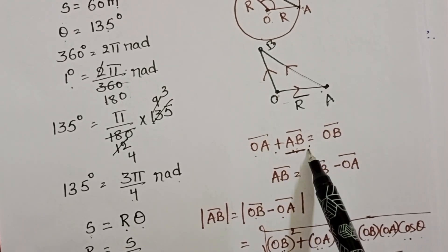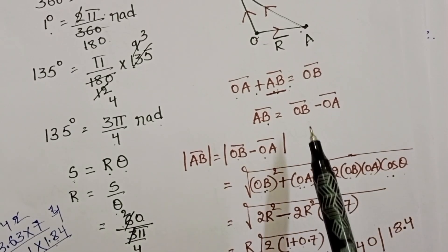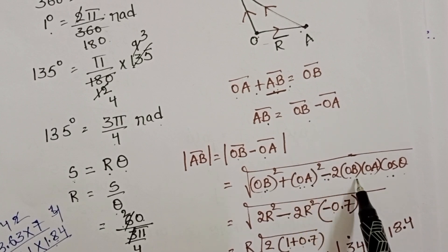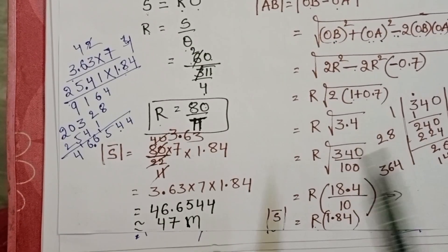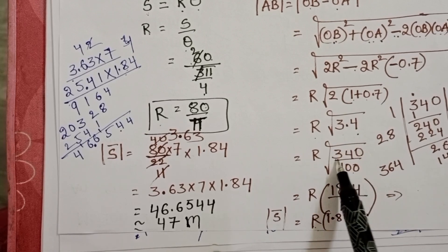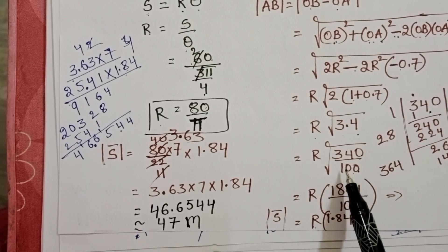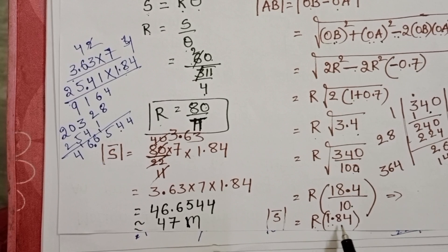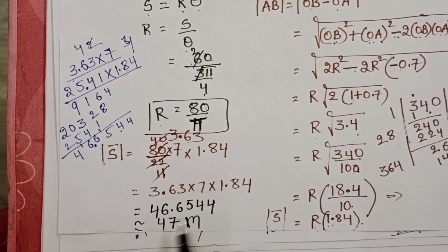AB = OB − OA by the triangular law of vector addition. The magnitude formula gives √(OB² + OA² − 2·OB·OA·cosθ), which simplifies to R√3.4. Multiplying and dividing by 100 inside the root: √(340/100). √340 ≈ 18.4, √100 = 10, giving 1.84. Substituting R = 80/π and multiplying, the result is 46.6544 ≈ 47 meters.